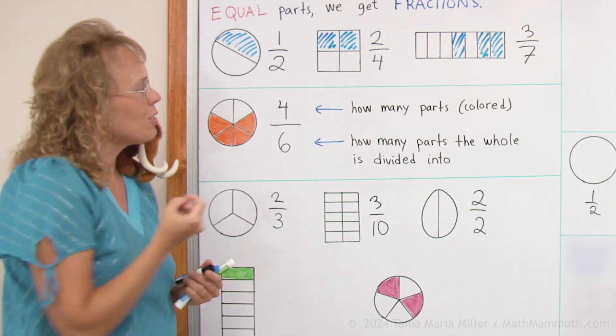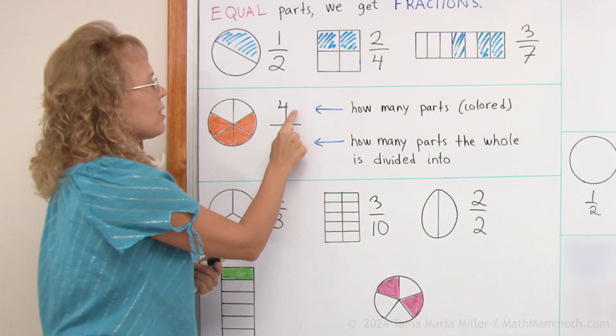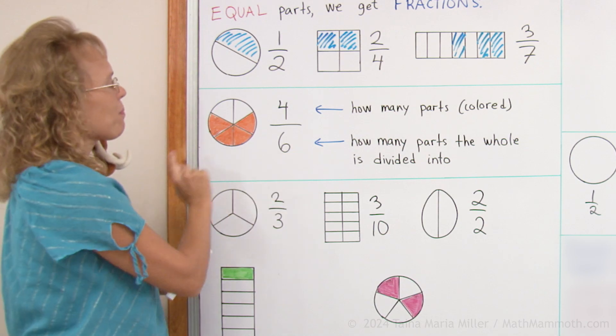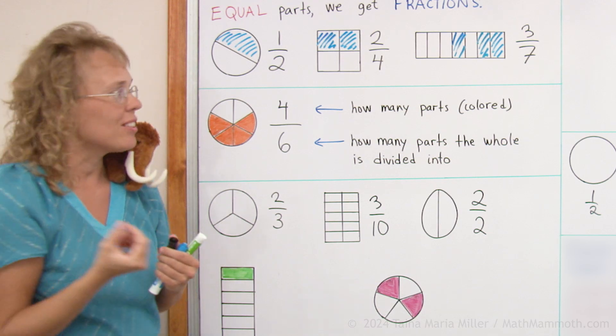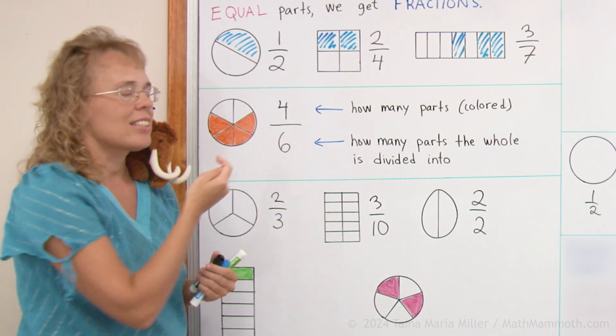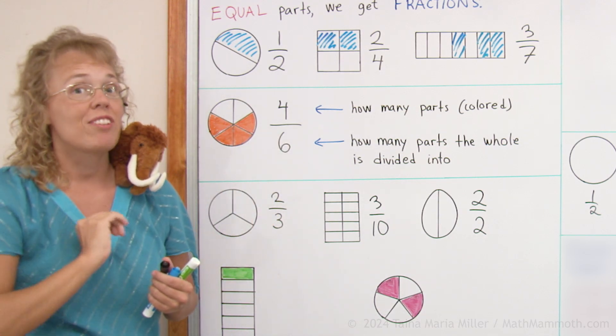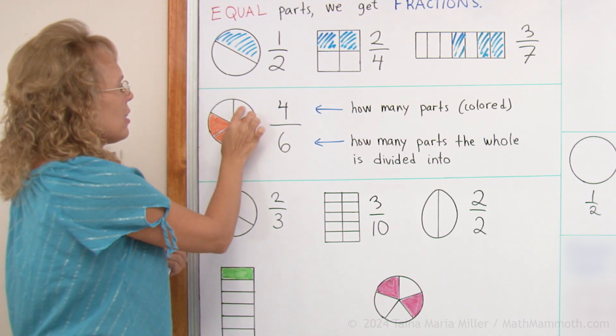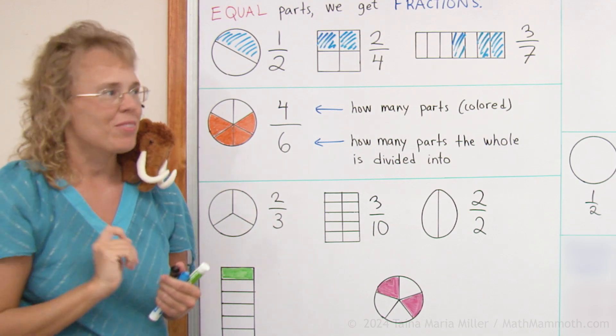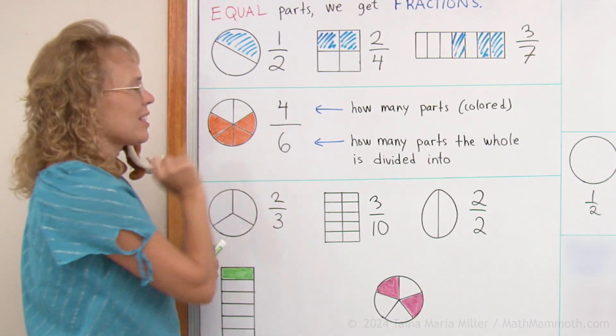In any fraction, when we write it like this, this is four sixths. This four tells us how many parts we're actually looking at, how many parts we have. And then six tells us how many parts is the whole divided into, how many equal parts. This circle is divided into six equal parts. And I colored four. So this is four sixths.